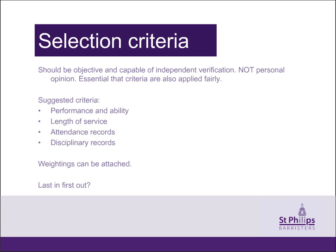If fair selection criteria are unfairly applied, then the dismissal will still be unfair. Unfairness is likely to arise where there's a glaring inconsistency in the application of the criteria, either as a result of bad faith or incompetence. Whilst a tribunal shouldn't attempt to remark employees, it is likely to get involved in the detail of how scores are arrived at, typically through thorough questioning of the witnesses who mark the employees. An employer should be confident that it can justify the application of the criteria, should disclose the individual scores to the employee explaining how they were arrived at, and give the employee a chance to challenge their individual markings as part of individual consultation.